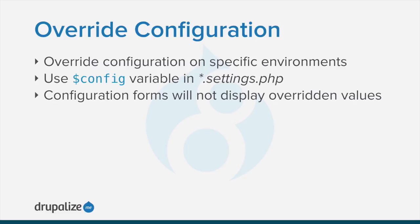The configuration override system enables you to override sensitive data in settings.php that you don't want stored in the database. Drupal 7's $conf global variable was renamed to $config and is accessible to the configuration system by default. Note, however, that configuration forms will display values from the site's active configuration — which may be the default, the database — and not values from $config in settings.php.